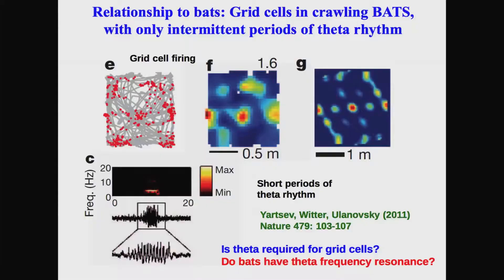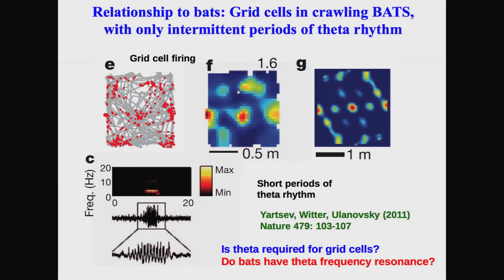What was surprising was that they didn't find continuous theta frequency oscillations. Instead of finding continuous oscillations of the sort you would see in a rat exploring the environment, they would see brief periods of oscillation lasting one or two seconds and then stop, even though the grid cells were firing continuously dependent on the location of the bat.